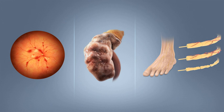People with diabetes can benefit from education about the disease and treatment, good nutrition to achieve a normal body weight, and exercise, with the goal of keeping both short-term and long-term blood glucose levels within acceptable bounds. Given the associated higher risks of cardiovascular disease, lifestyle modifications are recommended to control blood pressure. No single dietary pattern is best for all people with diabetes. For overweight people with type 2 diabetes, any diet that achieves weight loss is effective.